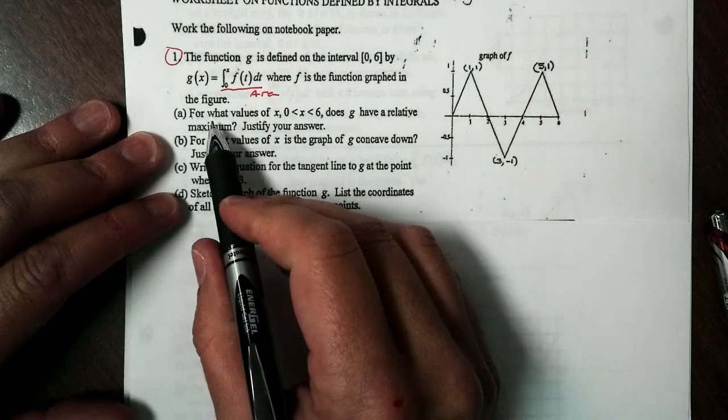So between 0 and 1, positive slope. So that is telling us between 0 and 1, g is concave up. Between 1 and 3 is a negative slope, telling us g is concave down. 3 and 5 is positive slope, concave up. And between 5 and 6 is negative slope, so g is concave down. And a point of inflection occurs where those concavities change direction.